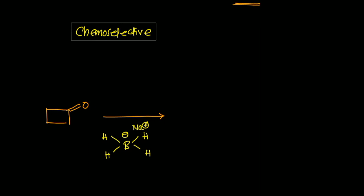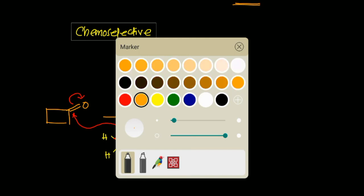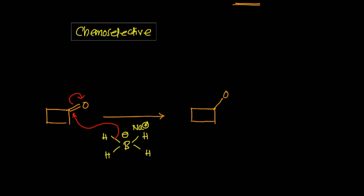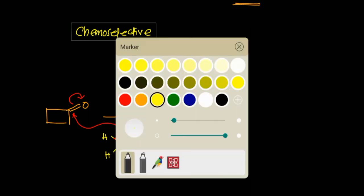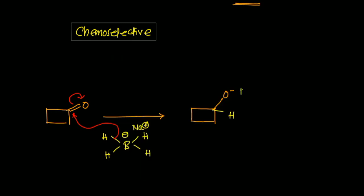The electron density is transferred via the sigma bond from the B–H bond to the carbonyl carbon, opening the bond toward the oxygen. You obtain a tetrahedral intermediate with an O⁻ and a hydrogen from the reagent, while the remaining BH3 fragment is still bonded. The O⁻ intermediate is formed in the first step.